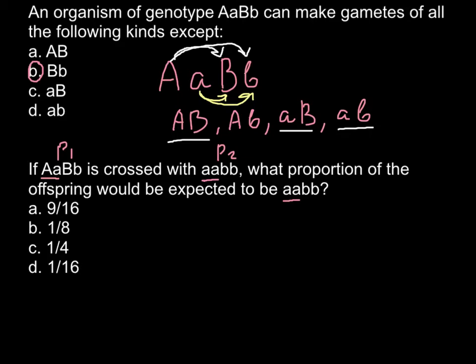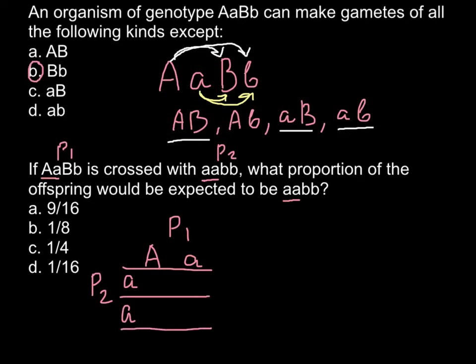We solve this using a Punnett square. Parent 1 is on the top and parent 2 is on the side. Parent 1 is heterozygous — capital A, small a — and parent 2 is homozygous recessive — small a, small a. The resulting genotypes are: capital A small a, capital A small a, small a small a, and small a small a.